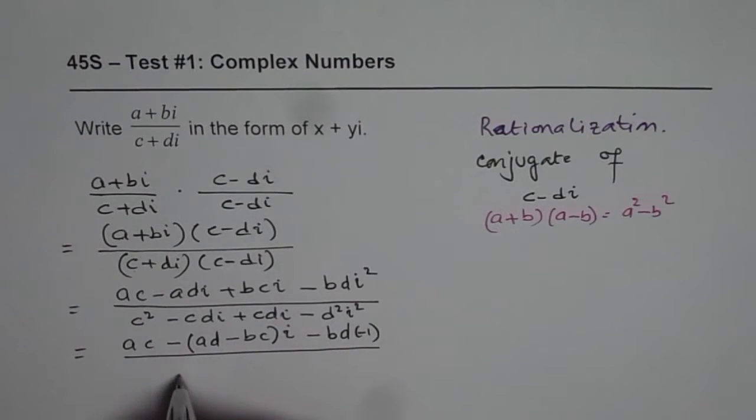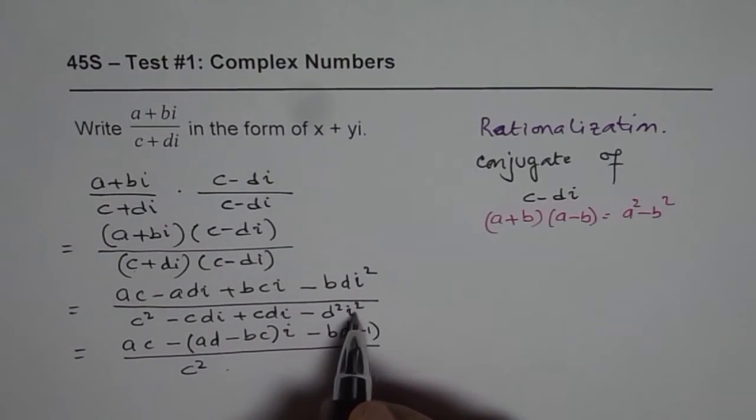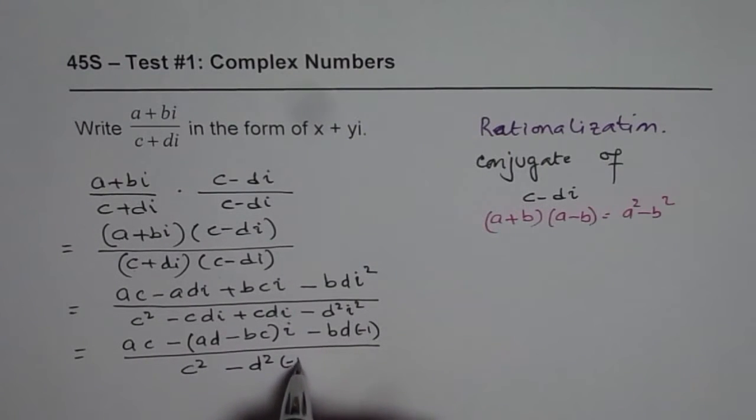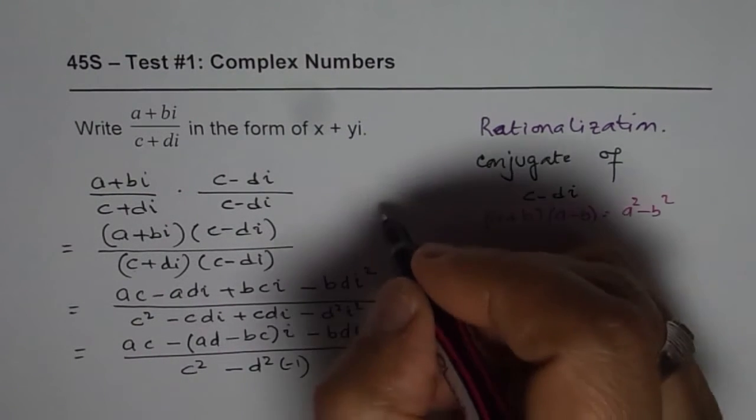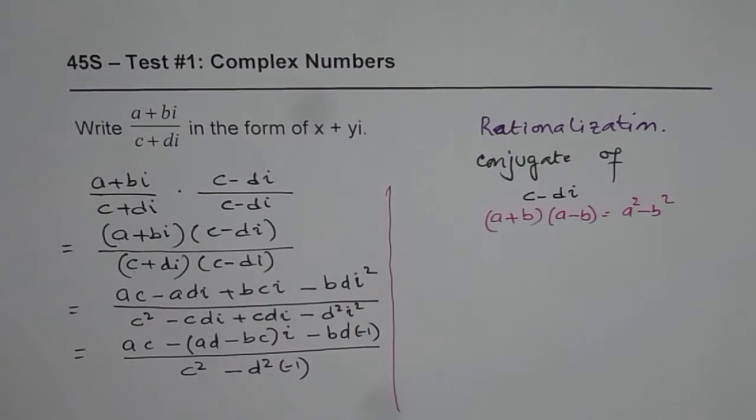Divided by c square. Cdi with minus sign when you add to plus cdi you get 0. And i square is minus, so we get minus d square minus 1. Let me take it to the right side now and simplify it further.